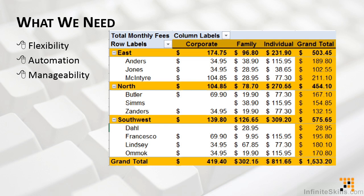Pivot tables provide exactly what we need. They give us the flexibility to rearrange, sort, and filter — all without even touching the original source data or having to make multiple copies of it. In some ways, they automate our work because when a pivot table is refreshed, it will be based off of all of the current information without having to manually update or modify categories and groupings. This makes everything more manageable.